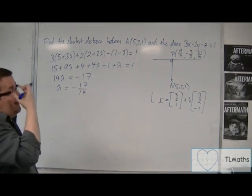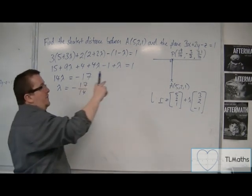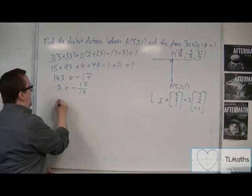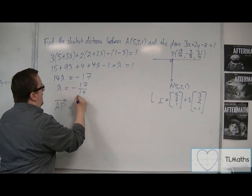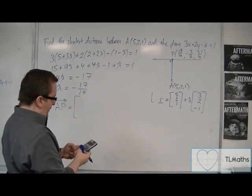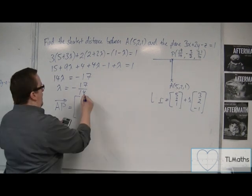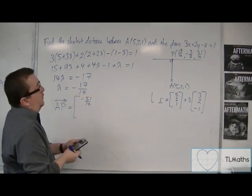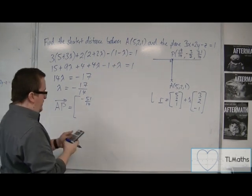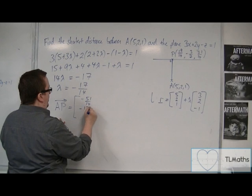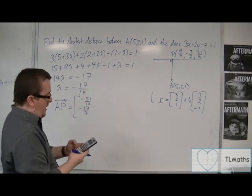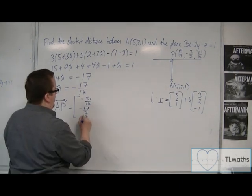I now need to work out the length of AP. The vector AP = P − A, so: 19/14 − 5 = −51/14, then −3/7 − 2 = −17/7, and 31/14 − 1 = 17/14.